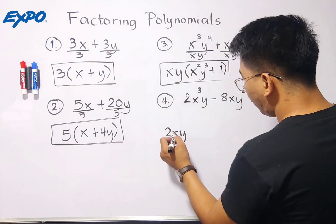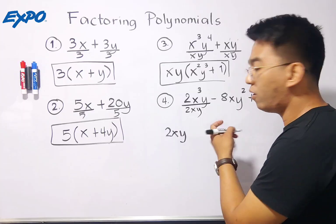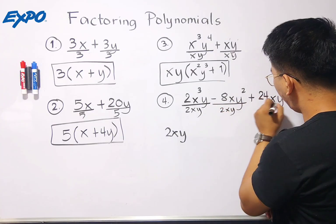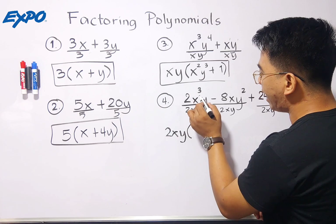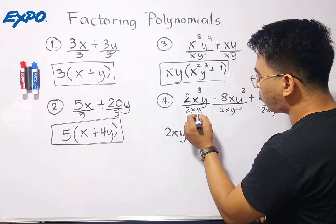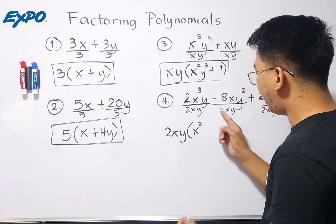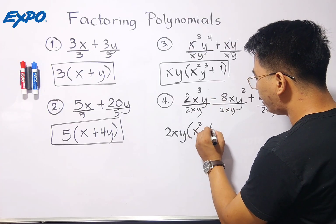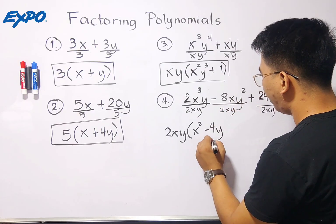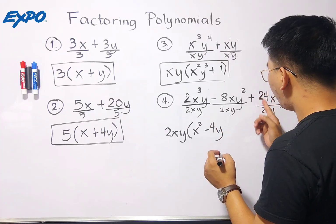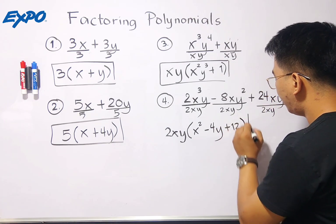So what will happen is that we will divide each term by the GCF 2xy and also this term by 2xy and also this term by 2xy. So, let's do it. 2 divided by 2 is 1, okay. x cubed over x is x squared, then y over y is 1. Meaning, when we divide this term, we get simply x squared. Next, negative 8 divided by 2 is negative 4. Our x will cancel out guys, automatically. Then our y squared over y is simply y. So, this is our second term. For the third term, 24 divided by 2 is simply positive 12 or 12. The x will cancel out. Meaning guys, these are the factors.